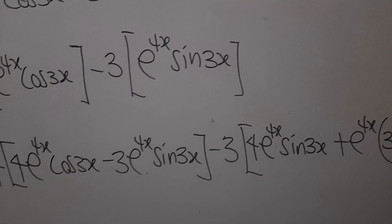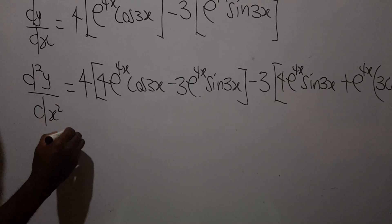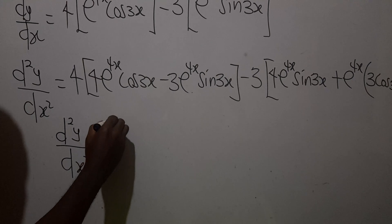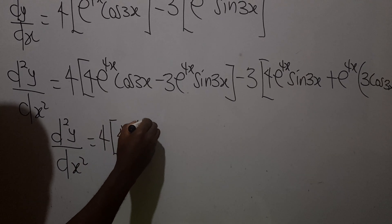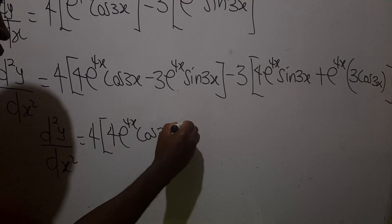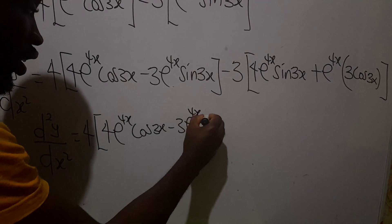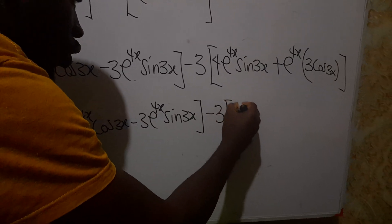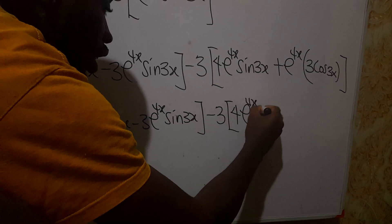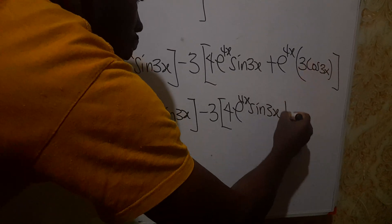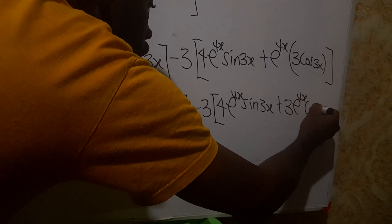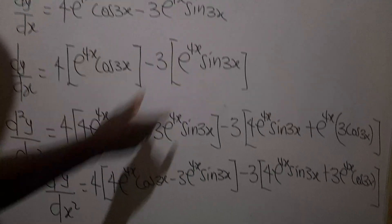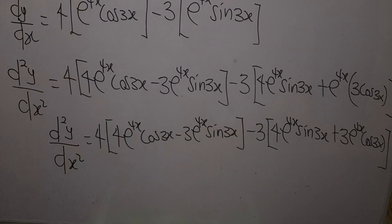So, polishing this, we can say our d²y/dx² is equal to 4 brackets: 4e^(4x)cos(3x) minus 3e^(4x)sin(3x), then minus 3 brackets: 4e^(4x)sin(3x) plus 3e^(4x)cos(3x). We can now expand this and collect like terms.